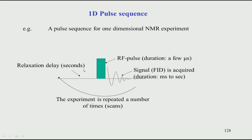The relaxation delay is typically of the order of seconds, and depends on the T1 of the sample molecule. You may not always know the T1, but based on molecular size one can roughly estimate it. For small molecules it is of the order of a few seconds — one or two seconds. You have to wait about three to five times the T1 value; ideally five times T1, though practically three times T1 is common.